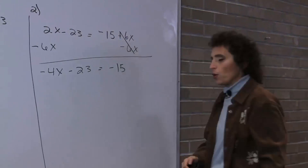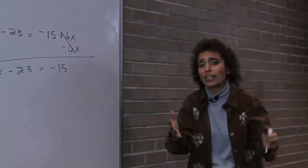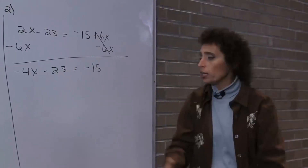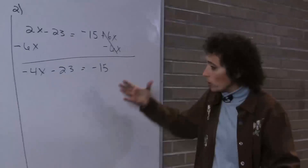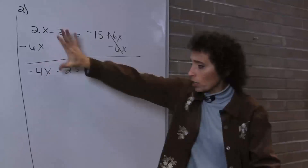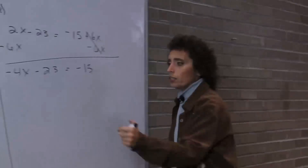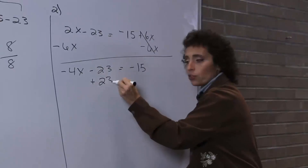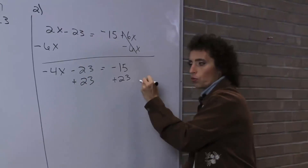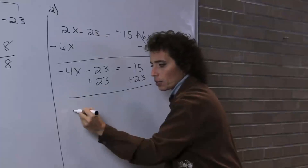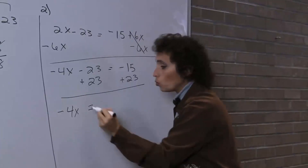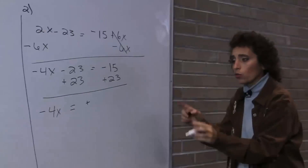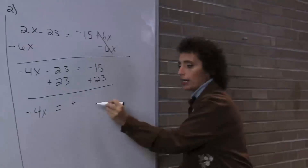That 6x on the right becomes 0 — I don't write the 0 unless it represents a side. Now we're back to exactly where we were the last time we did these problems. We know we have all the variables to the left, so now we're going to get all the numbers to the right. I'm not going to touch the variable. I'm going to add 23 to both sides. We get negative 4x equals — I owe you 15 but I have more than I owe — so I have 8.